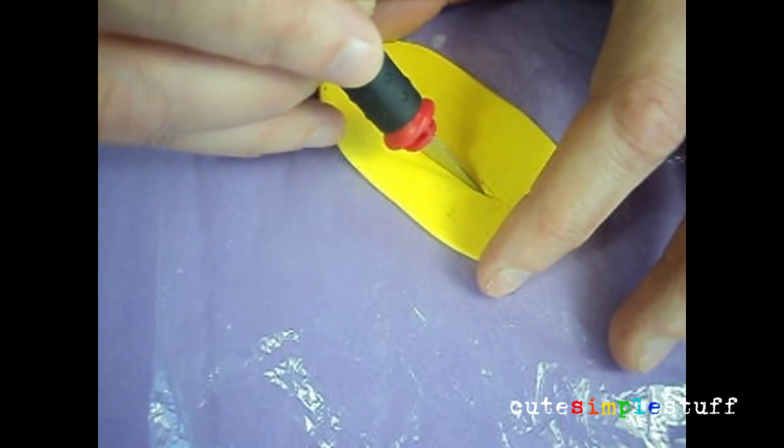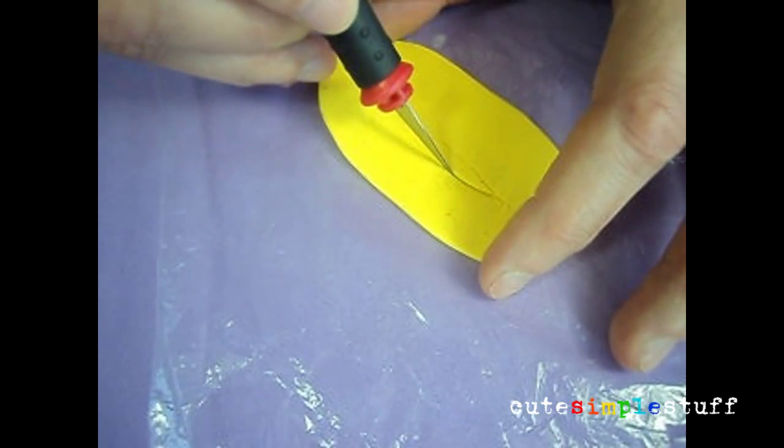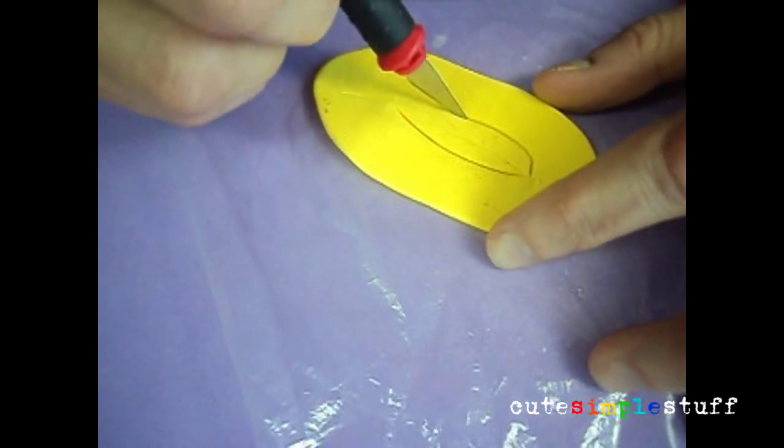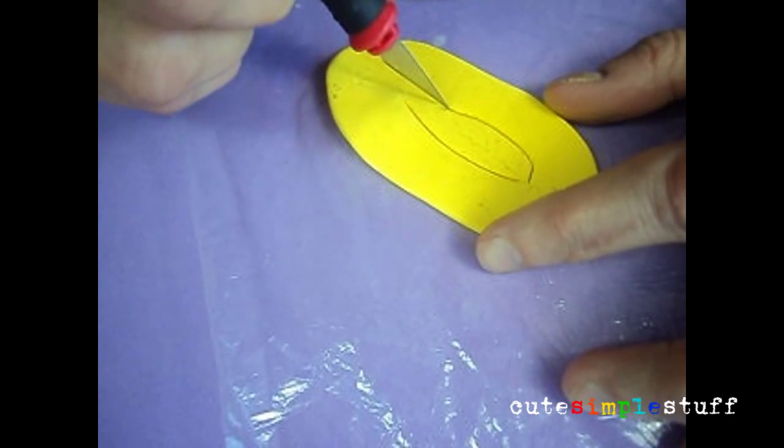Then I cut it with my exacto knife along the edges to get the shape of the leaf.